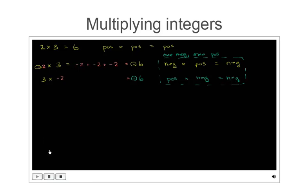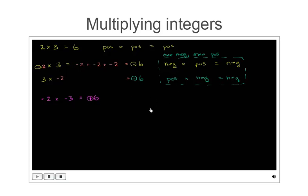Now let's think about the third circumstance: when both numbers are negative. For negative 2 times negative 3, you say 2 times 3 would be 6, and with a negative times a negative, the negatives cancel out, so you actually end up with positive 6. A negative times a negative gives you a positive number.